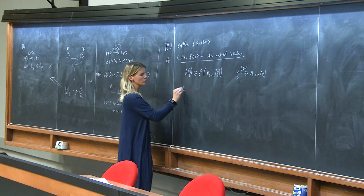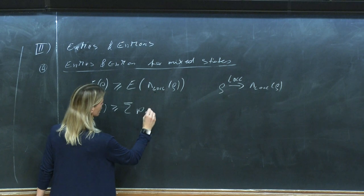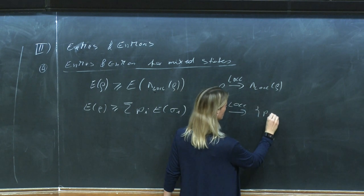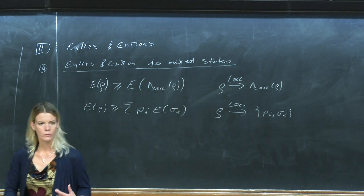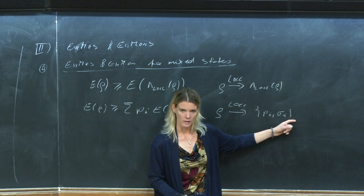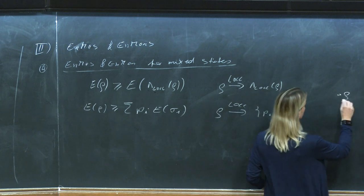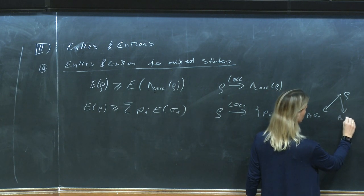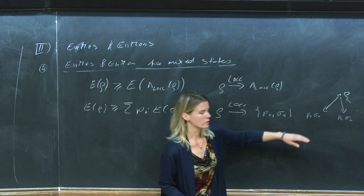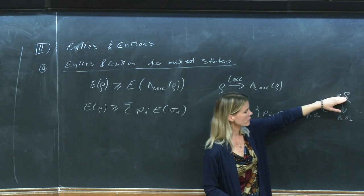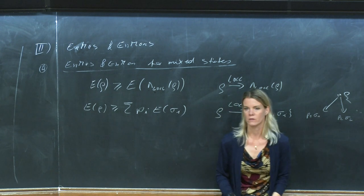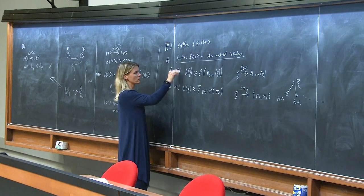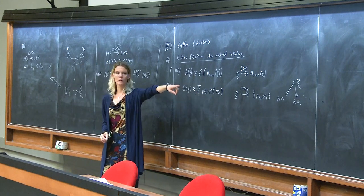We were also talking about the strong monotonicity condition, which says E of rho has to be larger or equal than the average amount of entanglement in the resulting ensemble: E(rho) ≥ sum_i p_i E(sigma_i). Here rho can be transformed via LOCC into this ensemble {p_i, sigma_i}. So I do some protocol, make some measurements, and obtain with probability p_i the state sigma_i — as in yesterday's example with pure states. The final state is with certain probability in one of these states sigma_i, and the condition is non-increasing on average.